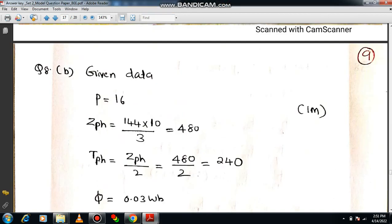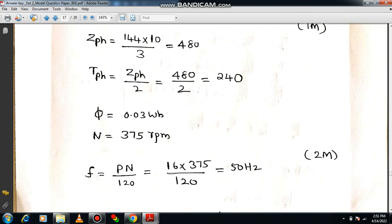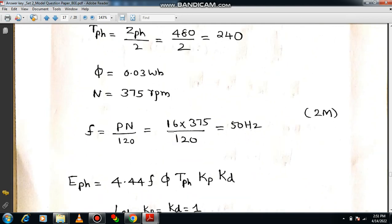Here first you have to mention what are the parameters they have given. I will show you how to solve this. Let me show you the given data. Number of poles P=16. Then Z phase, 3 phase means the total conductors will be 144 into 10 based on the slots, it will be 480 Z phase. That means the conductor per phase. Then T phase means Z phase divided by 2. That you have to remember always. The number of turns per phase will be equal to half of Z phase. That is 240. So it is not given directly. You have to calculate it. Flux is already given 0.03. Then N is also provided at 375 rpm.